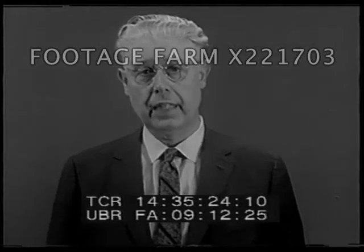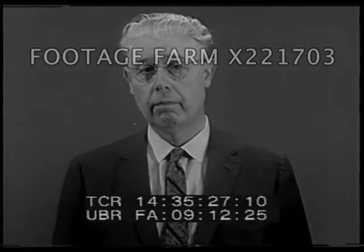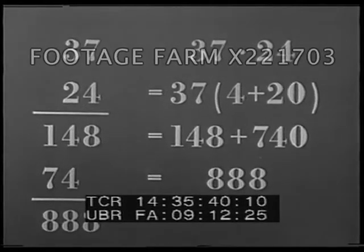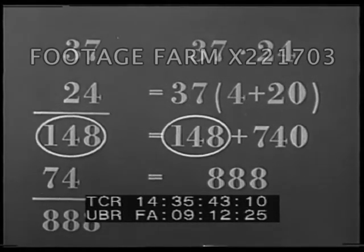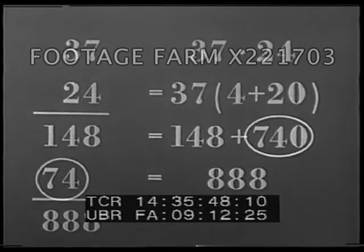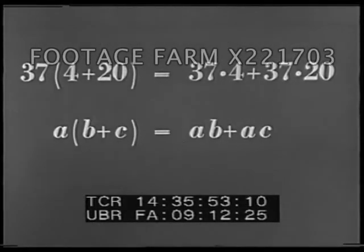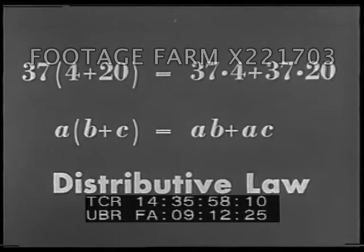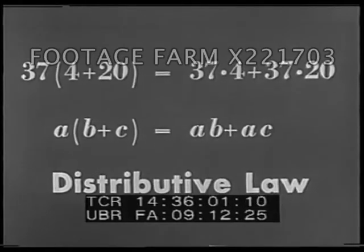Another simple example may be taken from arithmetic. This is the way we were taught to do a simple multiplication like 37 times 24. But here is what we have really been doing. Here is the 148 and here is the 740. The essential pattern written in algebraic symbols is called the distributive law and is one of the basic building blocks of algebraic structure.